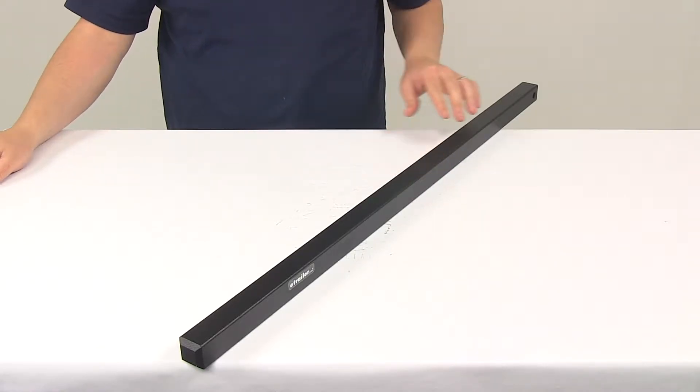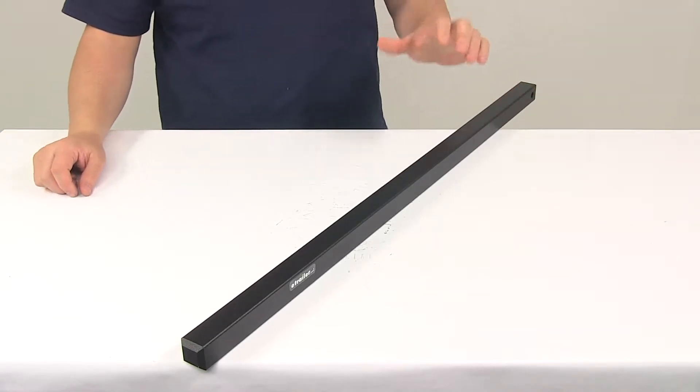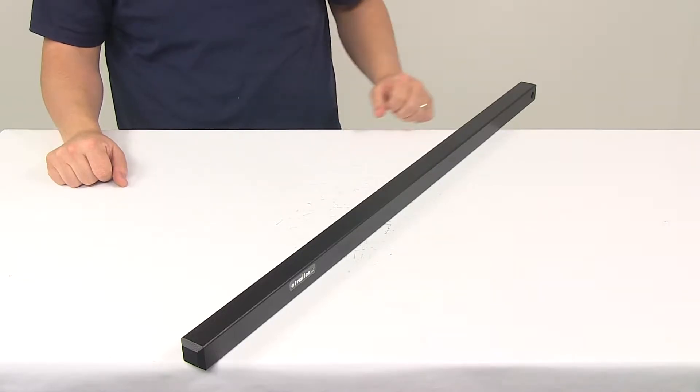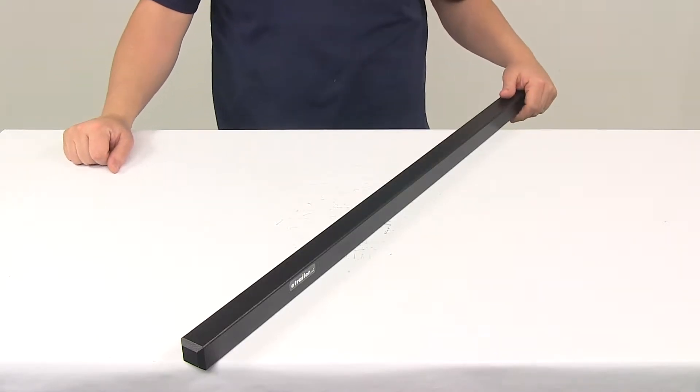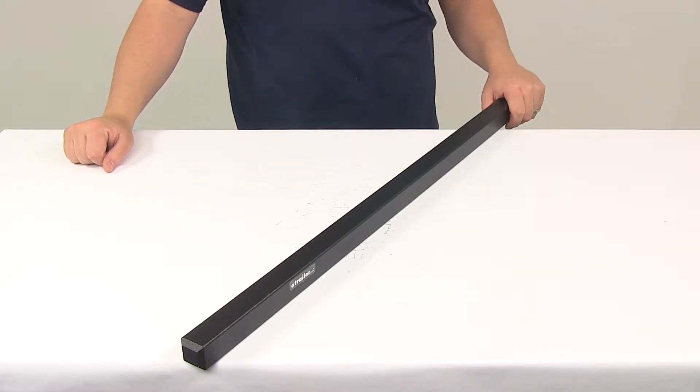Today we're going to be taking a look at the replacement trunnion spring bar for the Curt TrueTrack weight distribution system. This replaces one spring bar from your 10,000 pound gross towing weight Curt TrueTrack weight distribution system with integrated sway control, part number C17500.